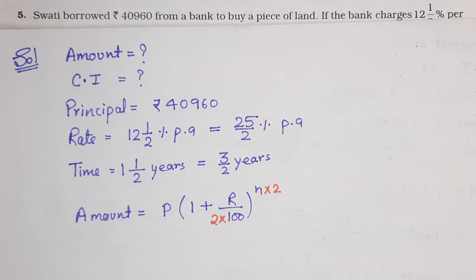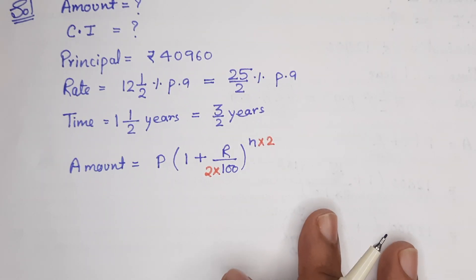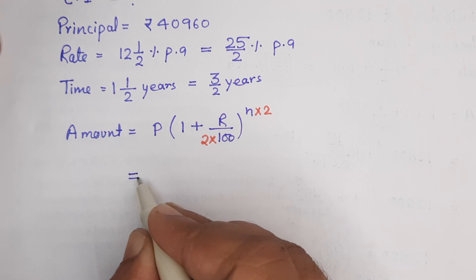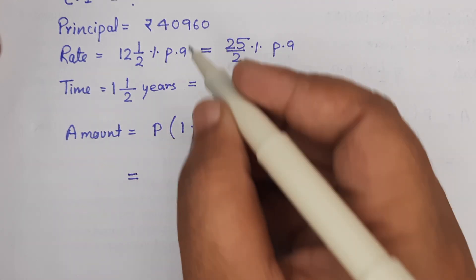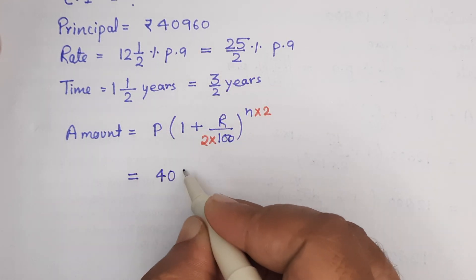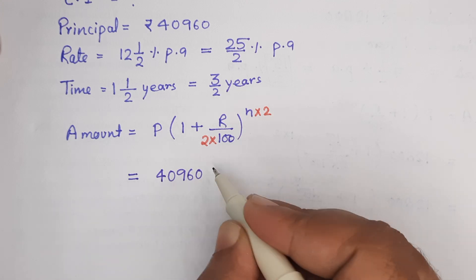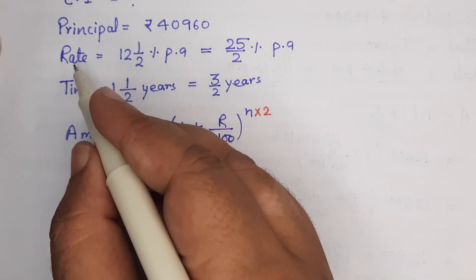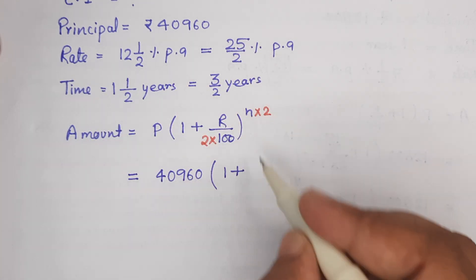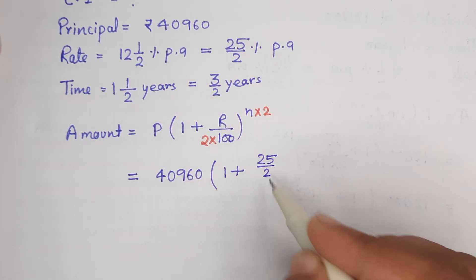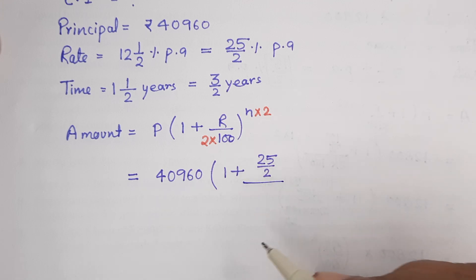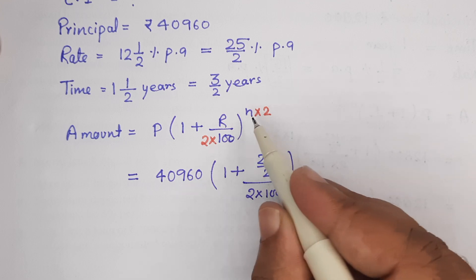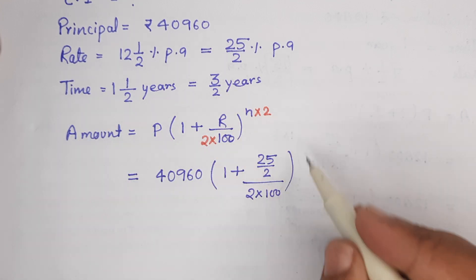अब value put करनी है formula में सीधे। A = 40,960 × (1 + 25/2 ÷ (2×100))^(3/2 × 2)। Principle कितना दे रखा है? 40,960। Rate 25 upon 2, फिर upon 2 into 100। Bracket close। N होता है time — time कितना दे रखा है? 3 upon 2, multiply by 2।